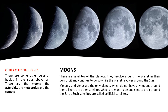Moons are natural satellites moving around the planets. Other than the natural satellites, there are man-made or artificial satellites which are placed into the orbit of the earth or the planets to gather information, like weather forecasting satellites and many others.